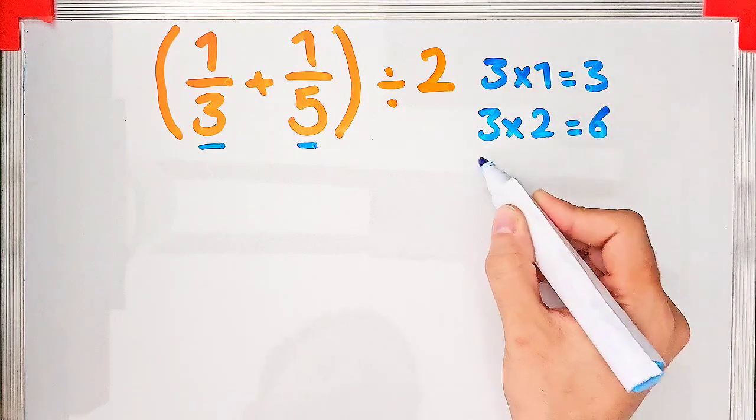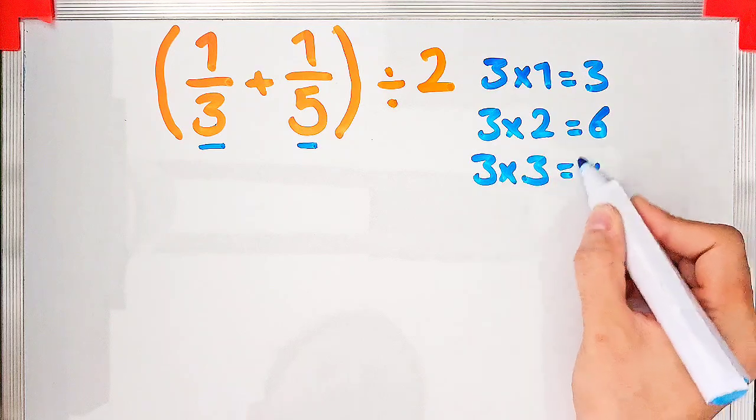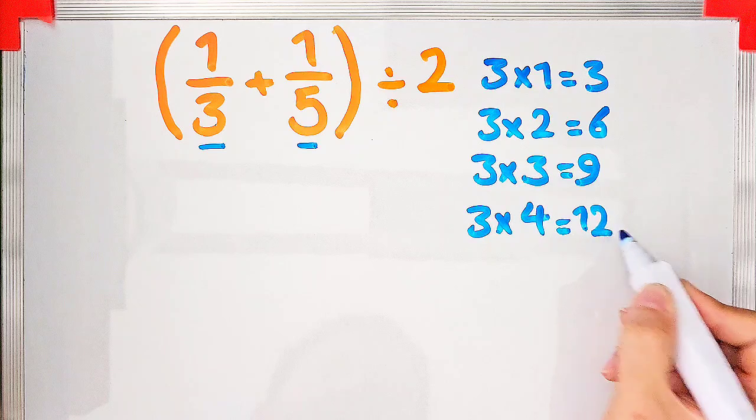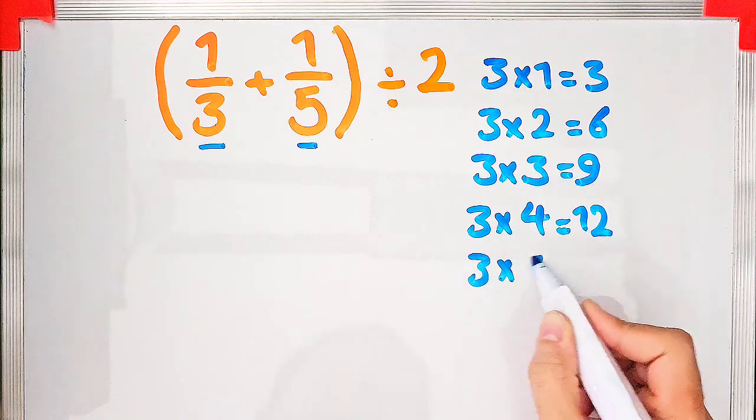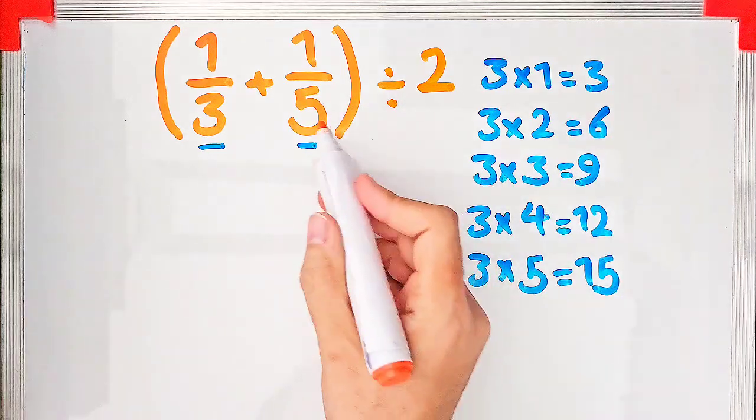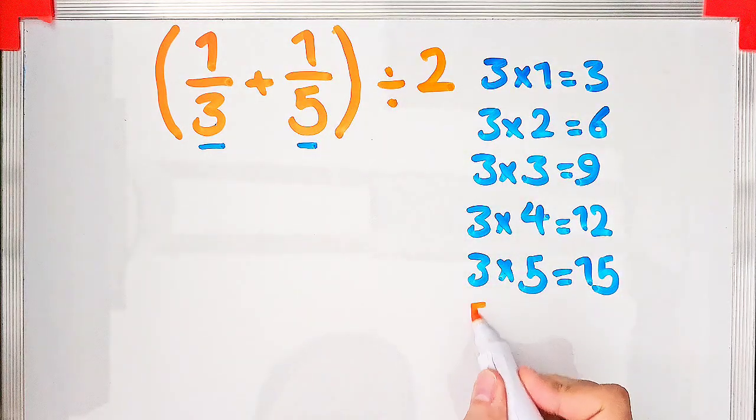Three times one equals three, three times two equals six, three times three equals nine, three times four equals twelve, three times five equals fifteen.